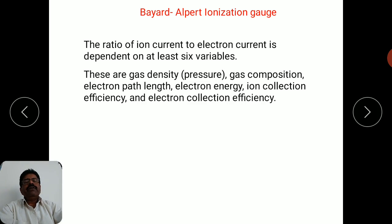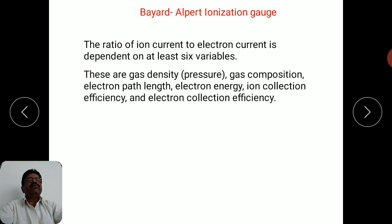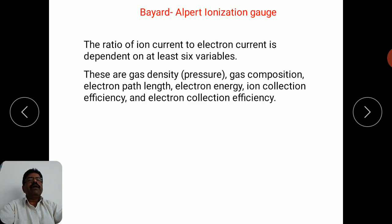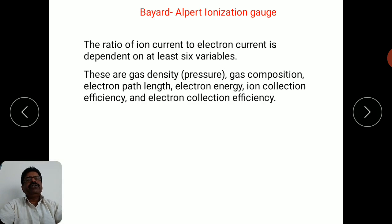Fifth is ion collection efficiency, which is related to the potentials applied to the ion collector, the design of the ion collector electrode, and its area. Sixth is electron collection efficiency, determined by the design of the electron collection gun and the potentials applied to it. These six parameters decide the ratio of ion current to electron current in the Bayard-Alpert ionization gauge.